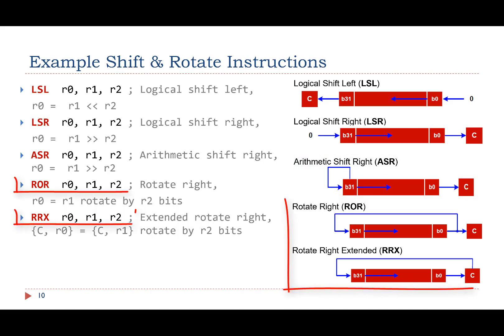There are two rotation instructions: rotate right and extended rotate right. Their difference is whether the carry bit is in the rotation loop. There are no rotate left instructions. Rotate left can be achieved by rotating right. In addition, there are no corresponding rotation operators in the C language.